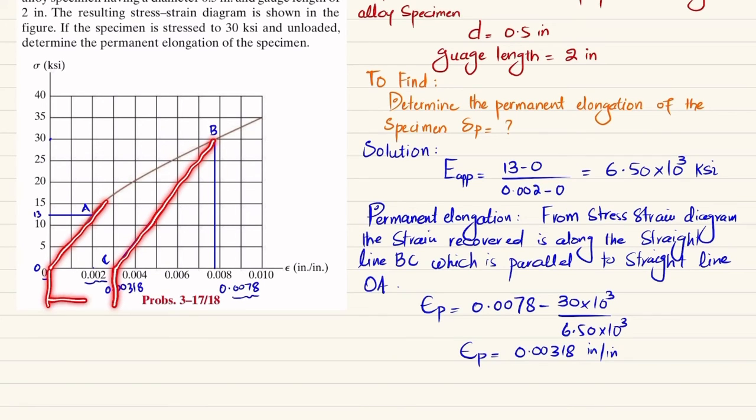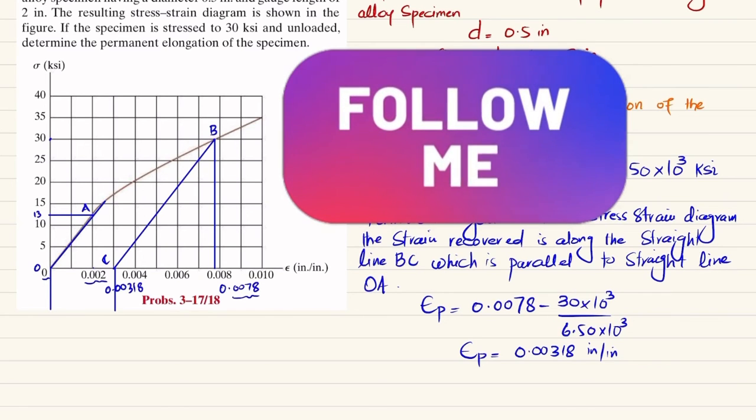There will be a permanent strain that will remain in this material. I will also write it over here—this will be the permanent strain, epsilon P.